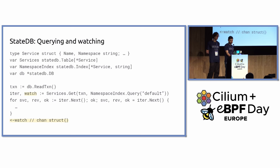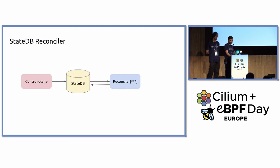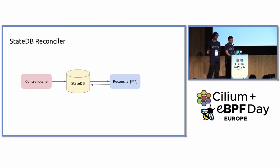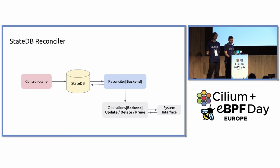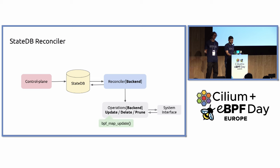With that we have a common API for building all sorts of useful tools that are not dependent on the data type itself. One of them is the reconciler, which we demoed earlier. The reconciler is a reusable utility — you point it at a StateDB table and you tell it what kind of operations to do with the objects. For example, for a backend object, you need to define the update, delete, and prune operations.